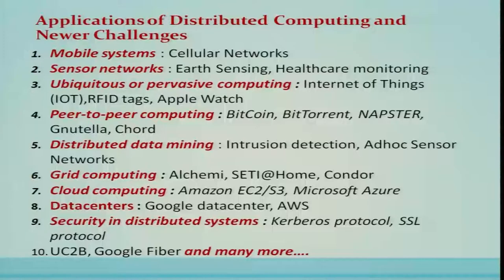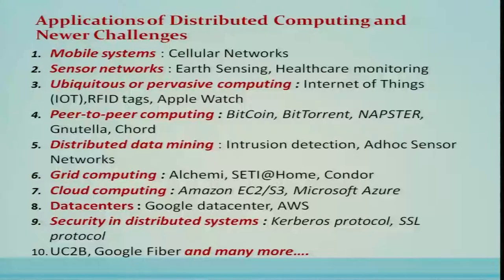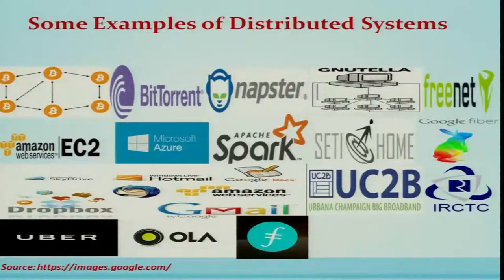There are applications in grid computing. In cloud computing, distributed computing principles are visible in Amazon EC2, EC3, and Microsoft Azure. Google data centers apply the principles of distributed computing. Security in distributed systems is widely used in payment gateways and online transactions — for example, Kerberos protocols, SSL protocols, and many other applications.